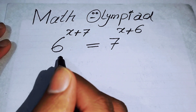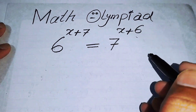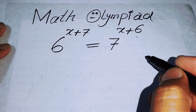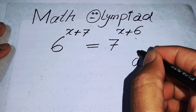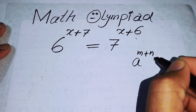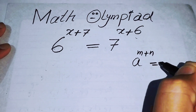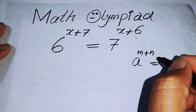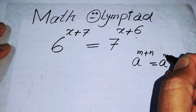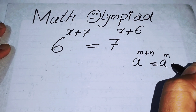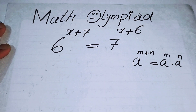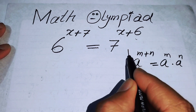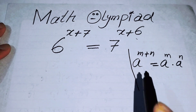The very first thing we are going to do is apply the exponent law. If you have a to the power of m plus n, we will break its exponent and write it as a to the power of m times a to the power of n. We can apply this exponent law here.